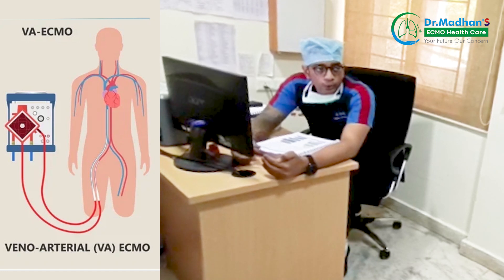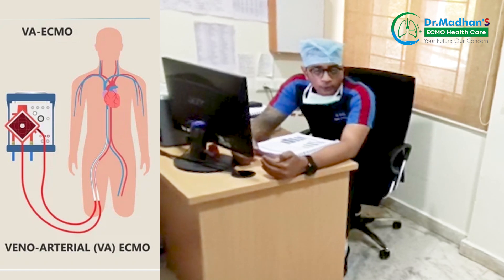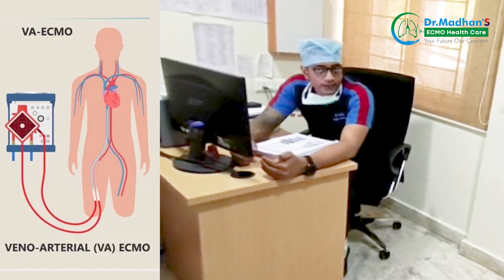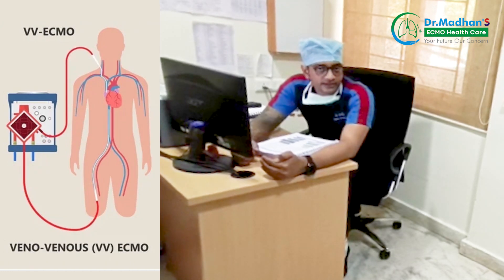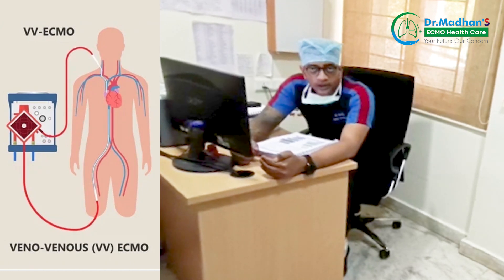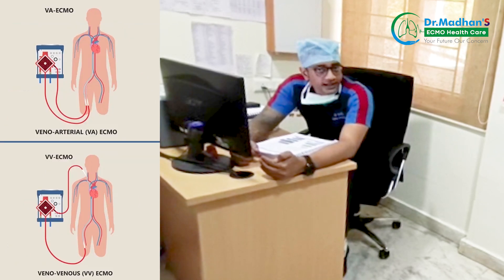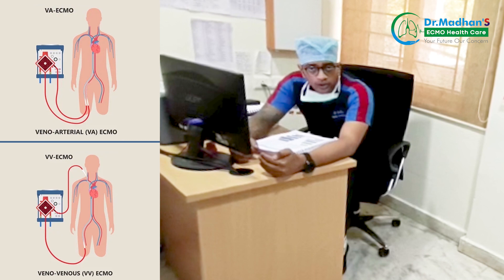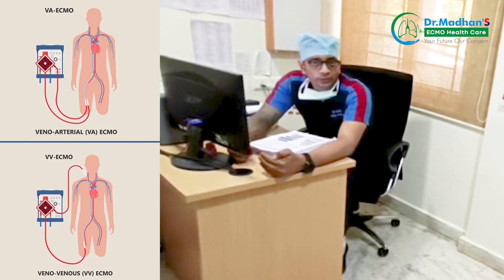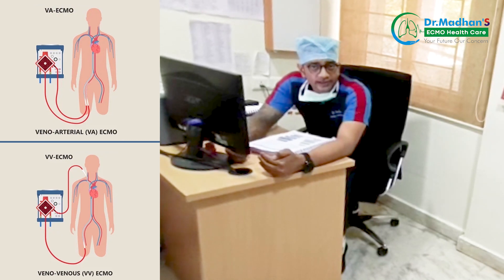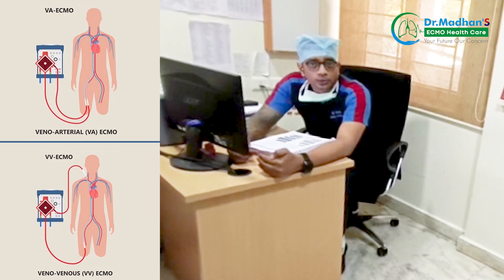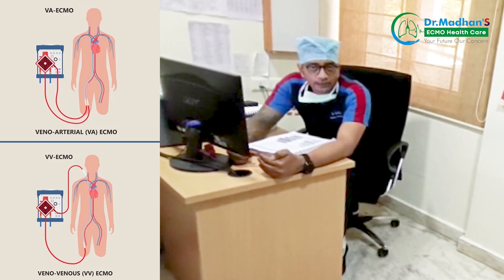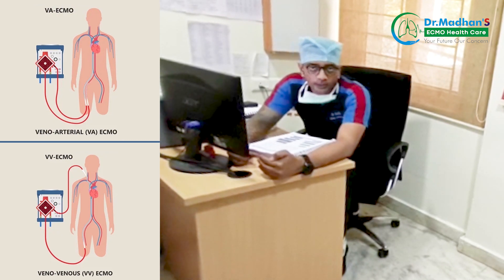ECMO has two types. One is VA ECMO and the next is VV ECMO. VA ECMO is Veno-Arterial ECMO and VV ECMO is Veno-Venous ECMO. We will explain the details in the upcoming videos.